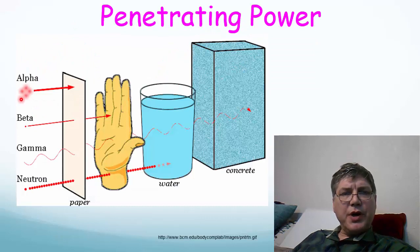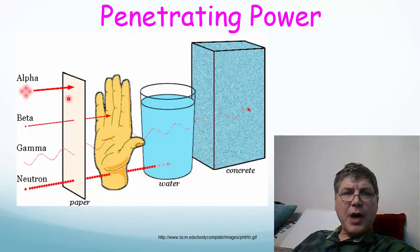This representation is of the penetrating power, which you should know. Alpha radiation, the least penetrating, can be stopped by something even as thin as a sheet of paper.